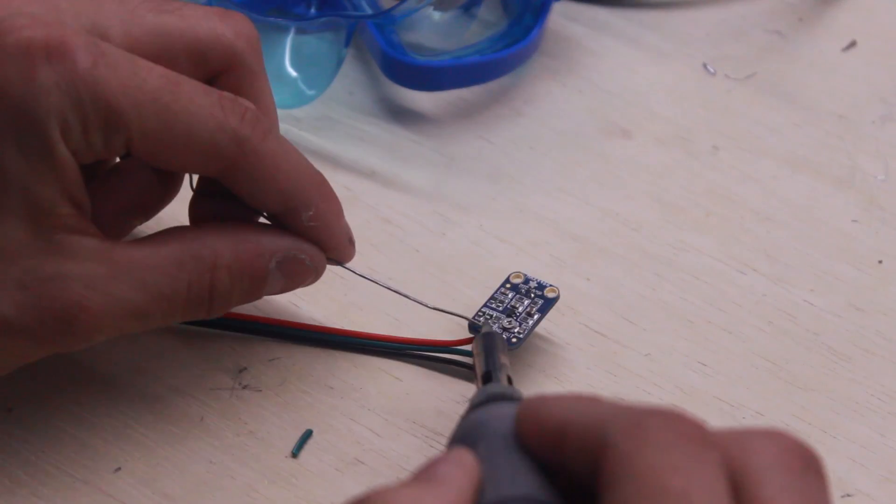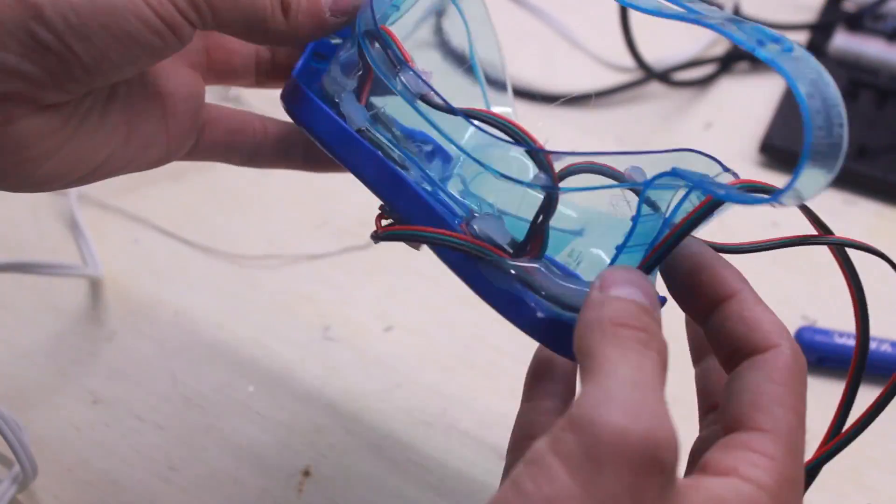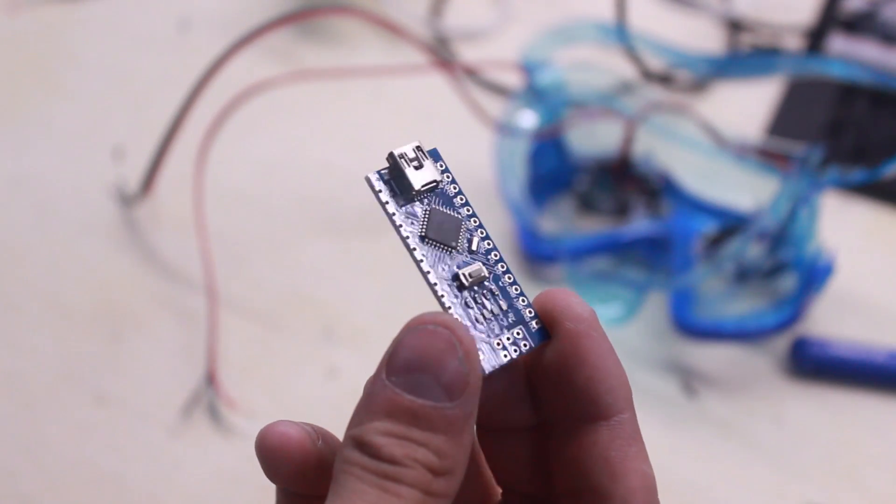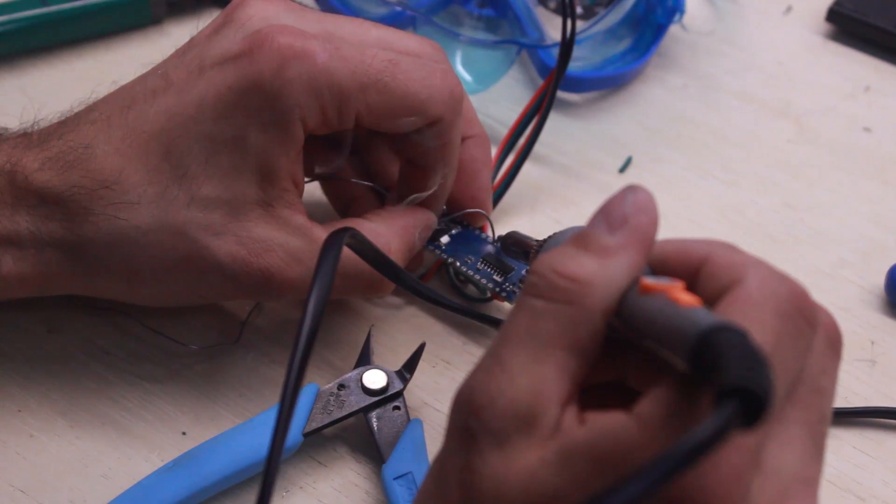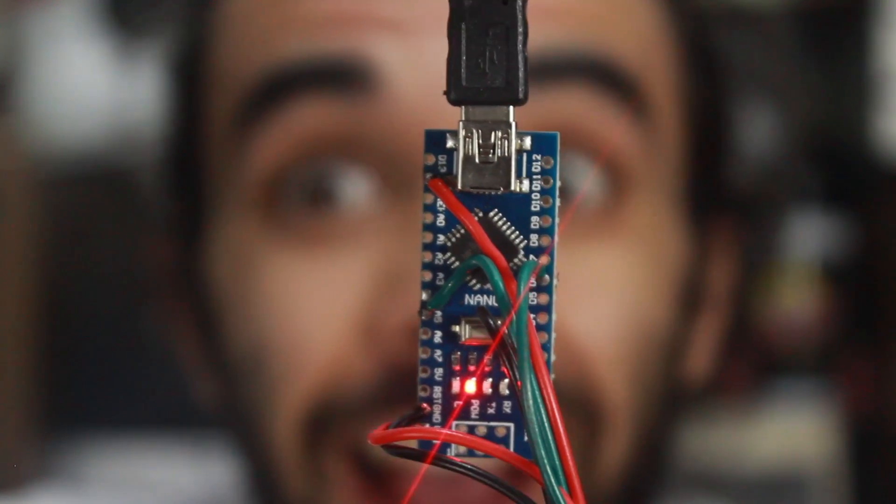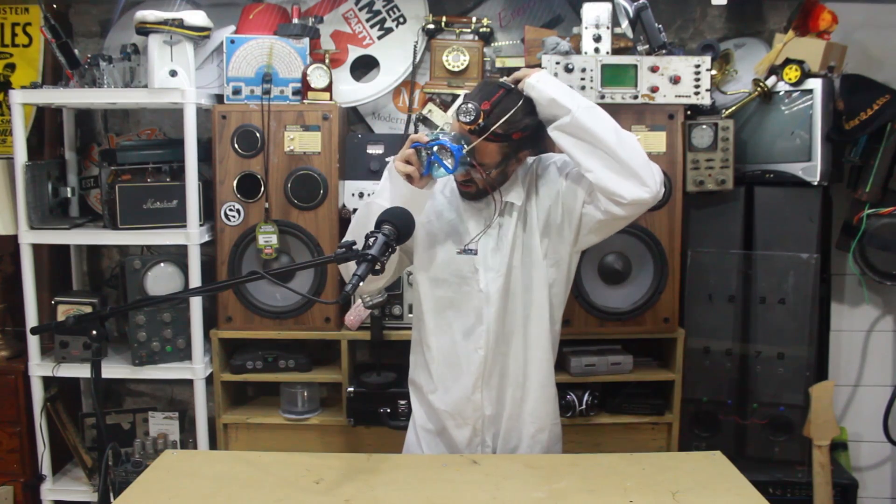Next, find a place for your microphone and glue it in place. I decided to go straight between the eyes. Run 3.6 volts and ground to the breakout board, and tie the signal output to an analog input on the microcontroller. Today, we'll use A0. Then, just plug in your battery pack and test your code.